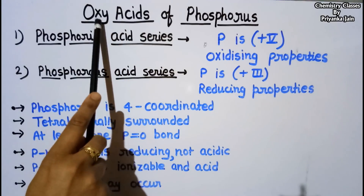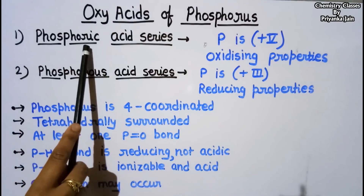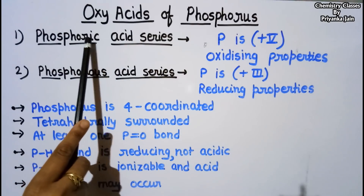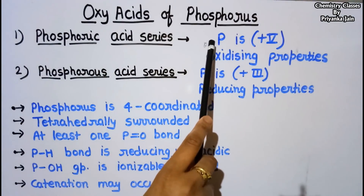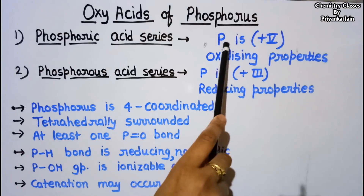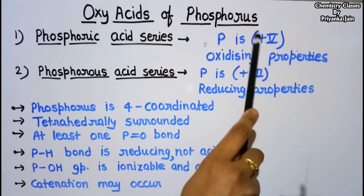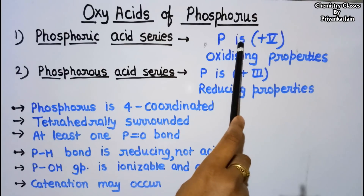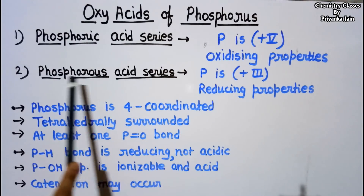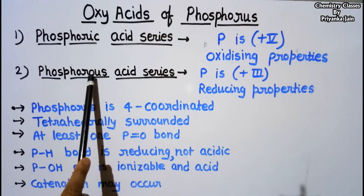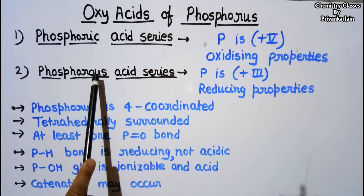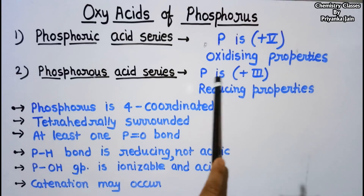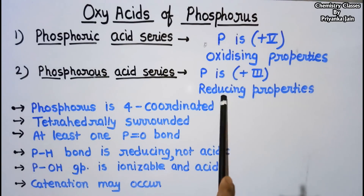In the case of phosphorus, oxy acids may be of two types. One is the phosphoric acid series — the 'ic' suffix means phosphorus is in a higher oxidation state, specifically +5. Since phosphorus is in a very high oxidation state, it tends to reduce, so this type of acid shows oxidizing property. The other type is the phosphorous acid series — the 'ous' suffix means phosphorus is in a low oxidation state, specifically +3.